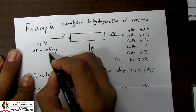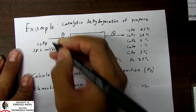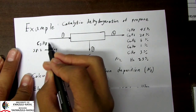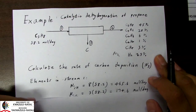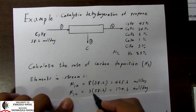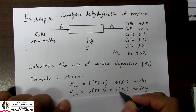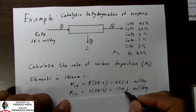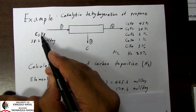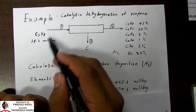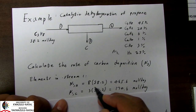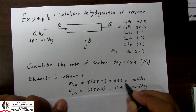Let's consider the elements and start with stream 1. Note that stream 1 has 58.2 moles per day of propane. There are 3 moles of carbon in 1 mole of propane, so the actual molar flow rate of carbon will be 3 times 58.2, giving us 174.6. If we look at our hydrogen, there are 8 moles of hydrogen in 1 mole of propane, so the molar flow rate of hydrogen in stream 1 is 8 times 58.2, giving us 465.6. Those are our input rates of our elements.